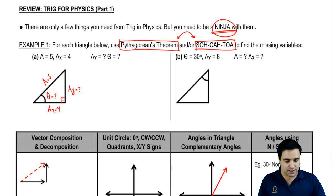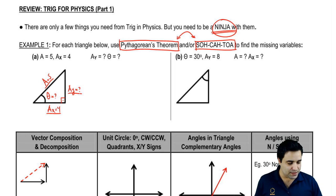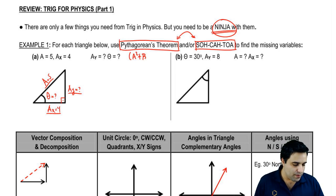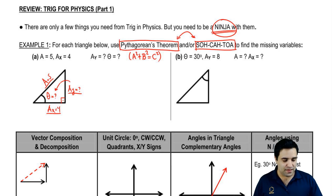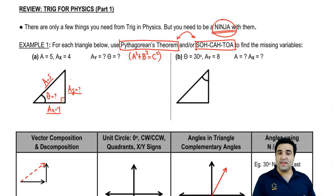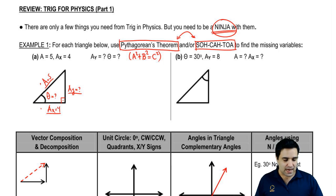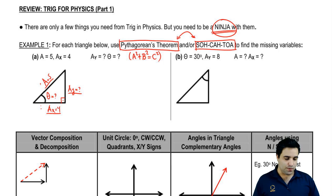The easiest way is to realize that with two sides you can find the third using the Pythagorean theorem — whichever combination of two you have works. Once you do that, you can then find theta. That said, you can actually find theta without finding AY first: as long as you know any two sides, you can find theta using SOHCAHTOA.